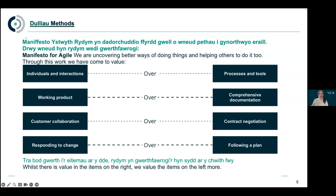When Agile was born, the manifesto was created. The Agile manifesto attempted to describe a different approach. It's not a strict rulebook on how to do things — Agile is a culture, a way of thinking and behaving, a set of values and principles. But there are ways of working and practices that can help you achieve these, and it's all about finding what works for your team.